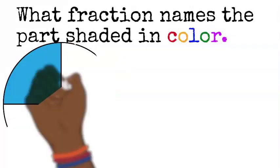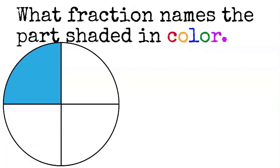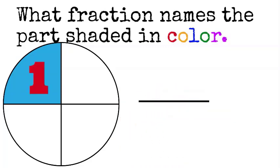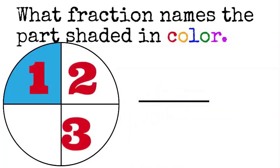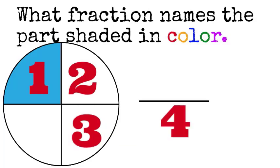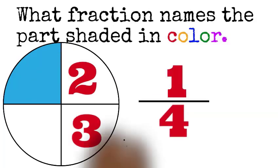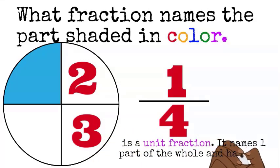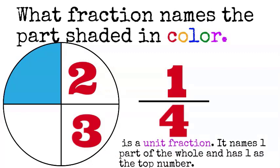How about this one? I think you're getting the idea now, right? So, you draw your bar to separate the top and bottom. Count the total amount of pieces that you see. There's a total of four. Four becomes your bottom number, and one becomes your top number. So, one-fourth is a unit fraction. It names one part of the whole. It has one as its top number.